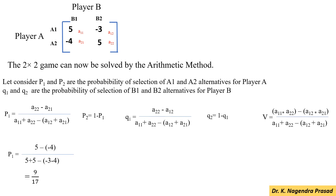Then, substituting all values for A11, A12, A21, and A22, P1 = (5 minus minus 4) divided by (5 plus 5 minus minus 3 and minus 4), which is 9/17. Then, P2 = 1 minus P1, that is 8/17.